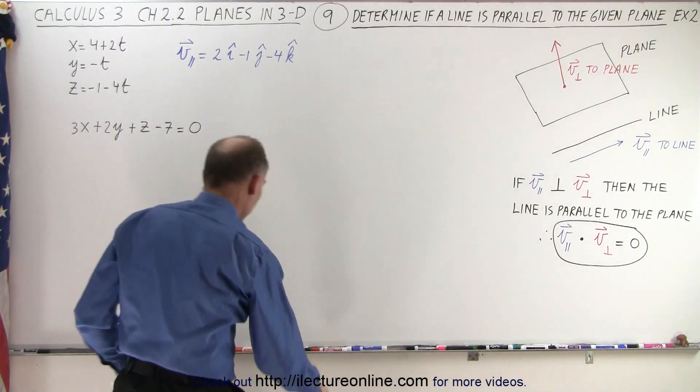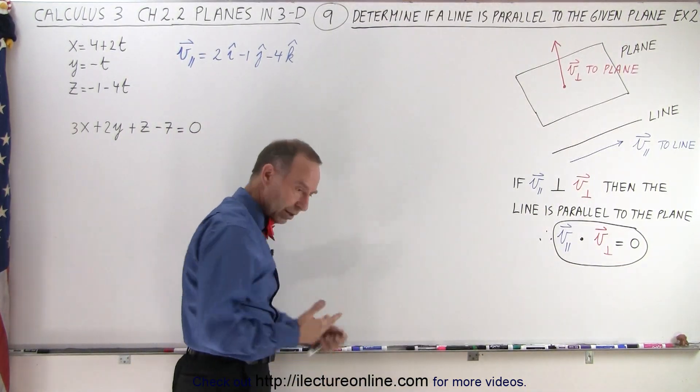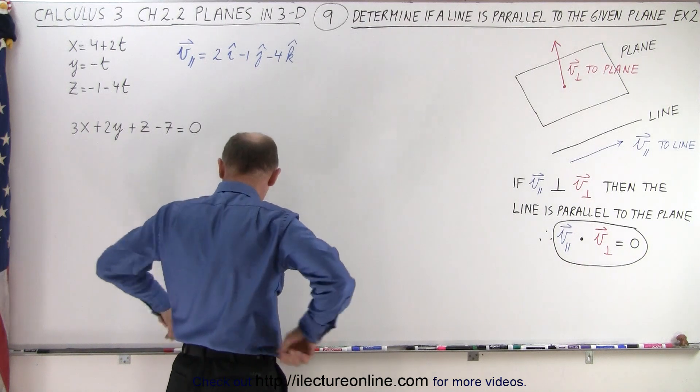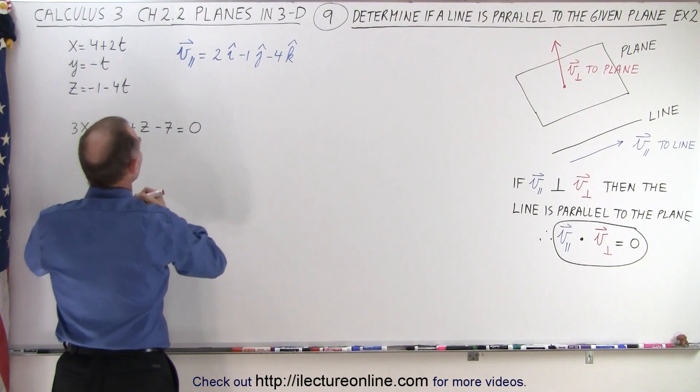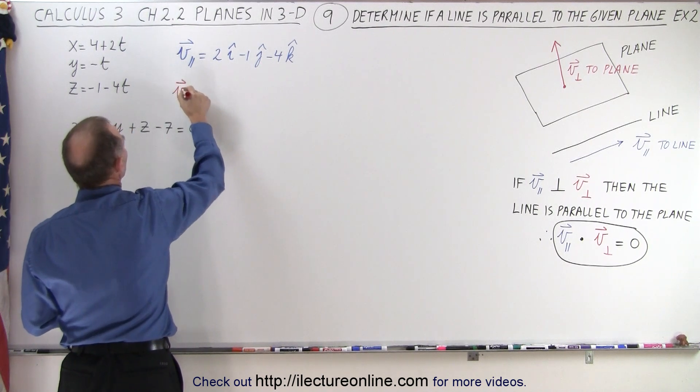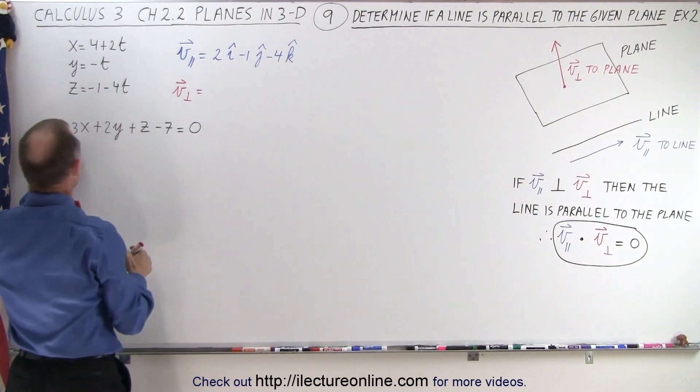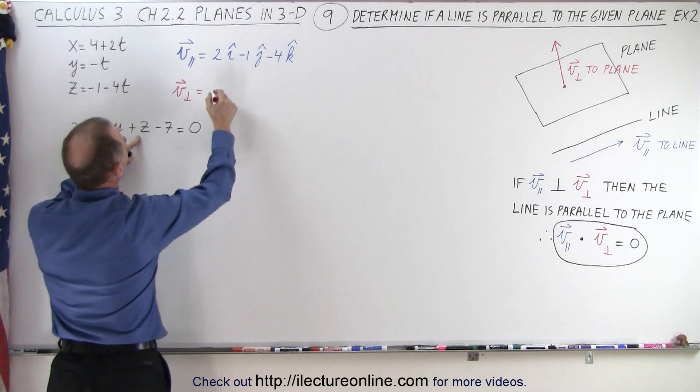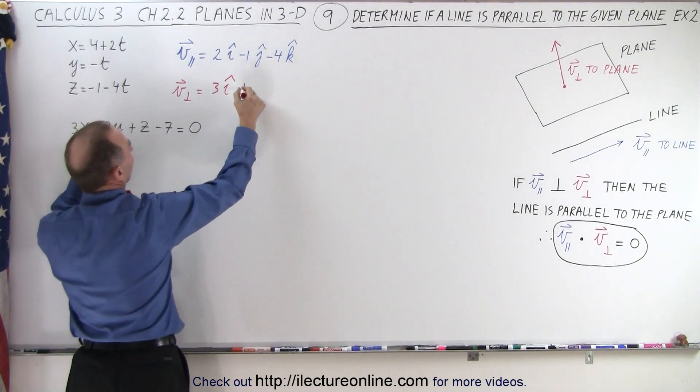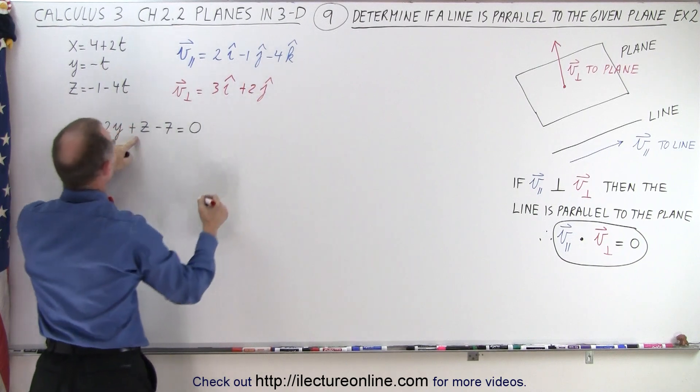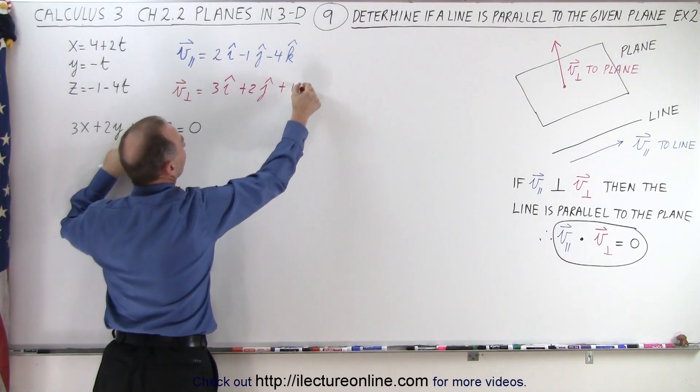So now we're also going to find the equation. I'm looking for my red pen. Ah, there it is. The vector that's perpendicular to the plane can be found as follows. The vector that's perpendicular is equal to, again, we get the coefficients here, and that gives us 3 in the i-direction, 2 in the j-direction, and plus 1 in the k-direction.